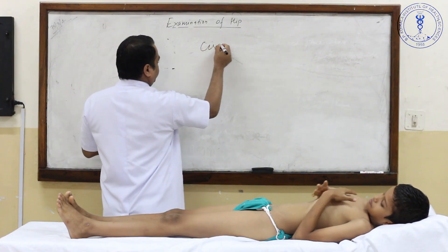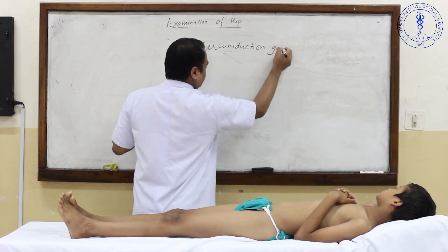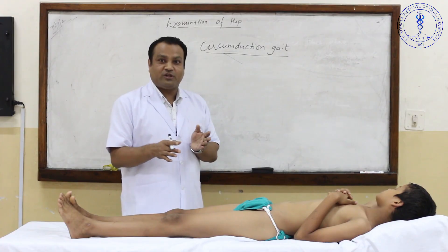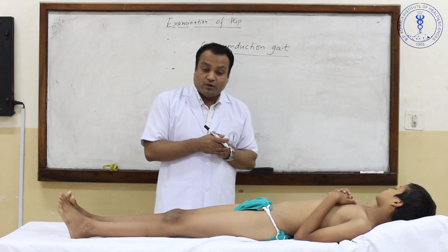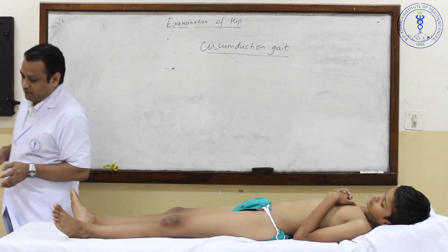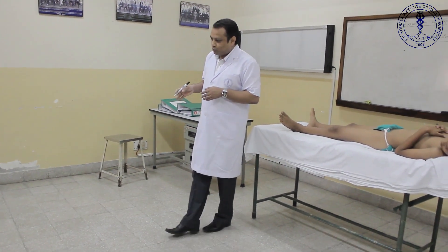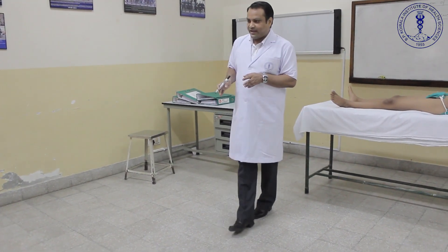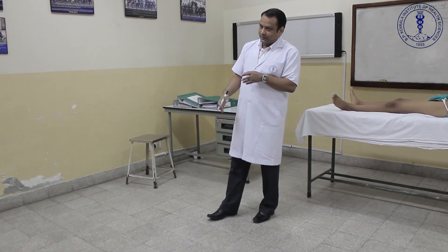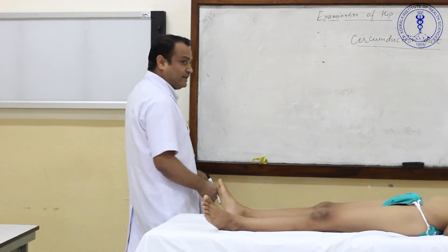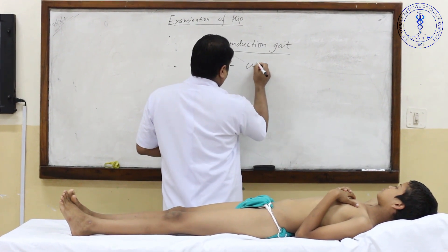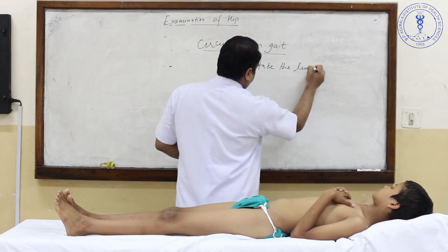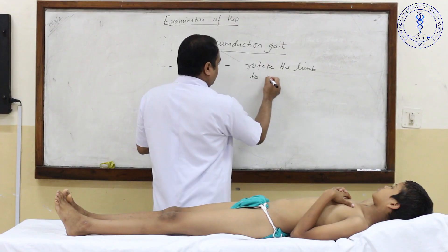Next is circumduction gait. In circumduction gait, there is apparent or sometimes true lengthening of the limb. If one limb is lengthened, the patient has to roll the lower limb circularly and bring it anteriorly to clear the step. Because the limb is effectively lengthened, the patient has to circumduct the limb to clear the ground. This is because of functional lengthening of the lower limb.